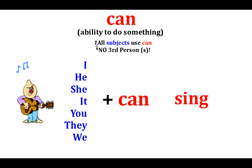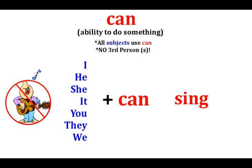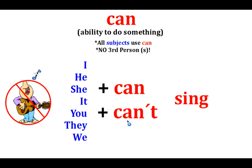For no ability, we use can't. Again, all subjects: I can't sing, he can't sing, she can't sing, it can't sing, you can't sing, they can't sing, we can't sing. All subjects use the negative can't. So, can is the ability to do something, and can't is no ability to do something.